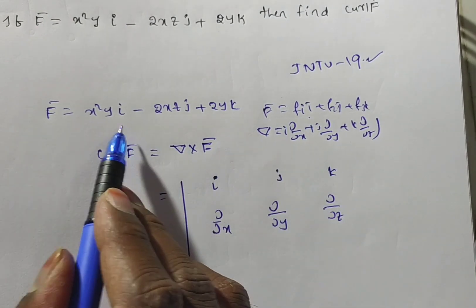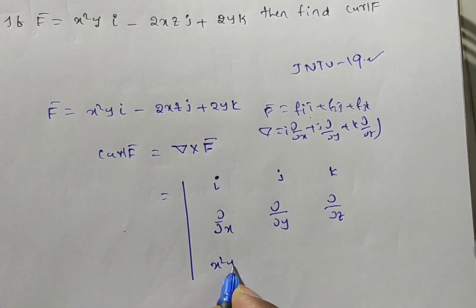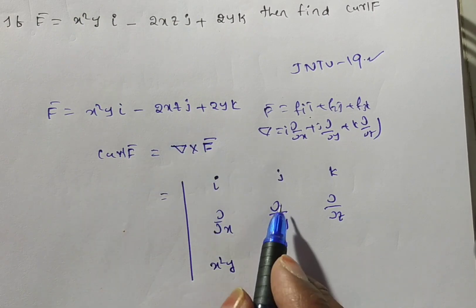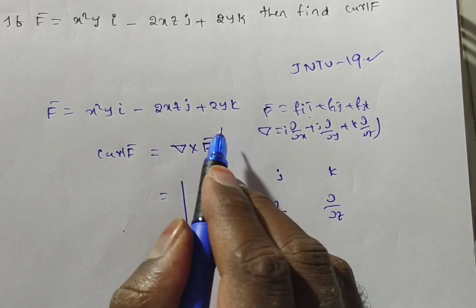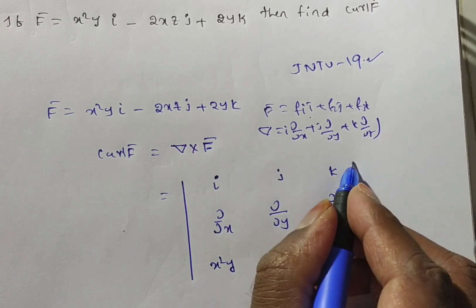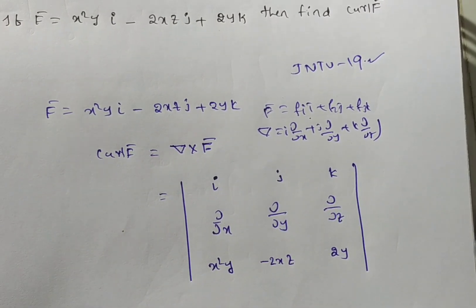f1 is nothing but i coefficient, what is the i coefficient here? x²y. j coefficient is minus 2xz and k coefficient is here, 2y. That is it.